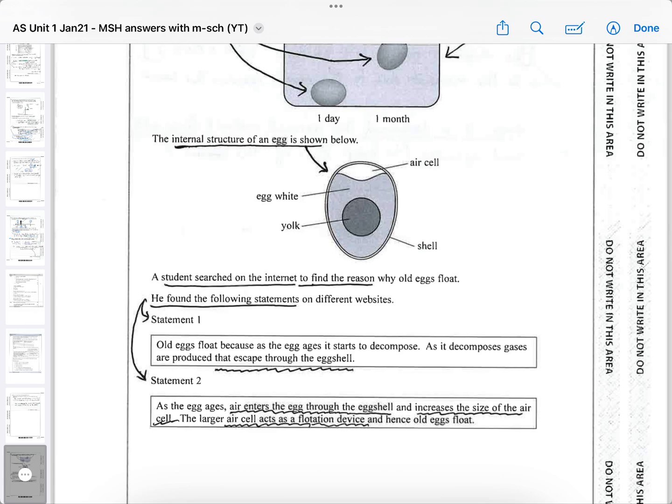Then it says a student researched on the internet to find the reason why old eggs float. He found the following two statements on different websites. The first one says old eggs float because as the egg ages it starts to decompose. As it decomposes, gases are produced that escape through the eggshell. And statement two is as the egg ages, air enters the egg through the eggshell and increases the size of the air cell, and the larger air cell acts as a flotation device. And hence the old eggs float.